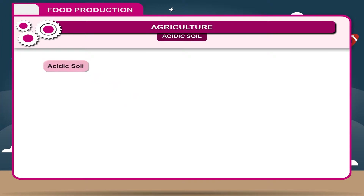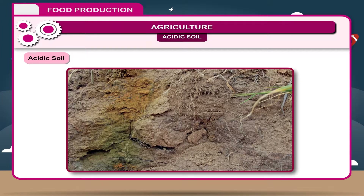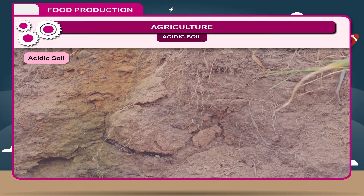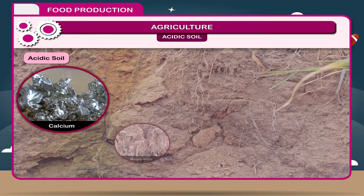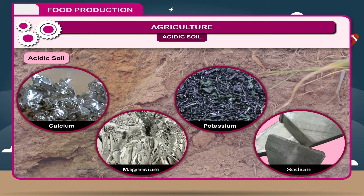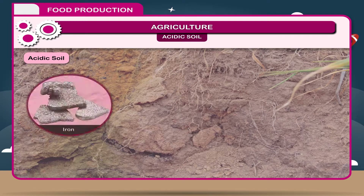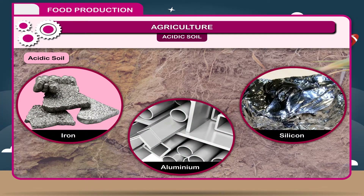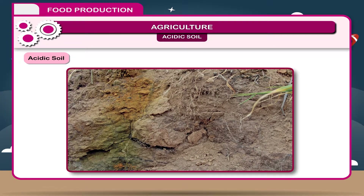Acidic Soil: Soil in which pH value is below 7 is called acidic soil. In the region of high rainfall, soils are acidic because basic salts — calcium, magnesium, potassium, sodium — are leached and acidic salts — iron, aluminum and silicon — are left. This soil is not good for agriculture.